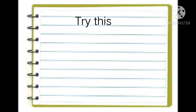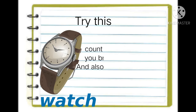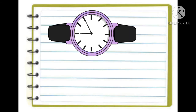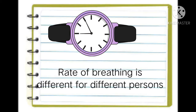Children, try this. Use a watch to count how many times you breathe in one minute when you are sitting comfortably. From this, work out approximately how many times you breathe in an hour. Normally we breathe 15 times per minute, so 15 × 60 = 900 times per hour. However, the rate of breathing changes with different persons and different activities.